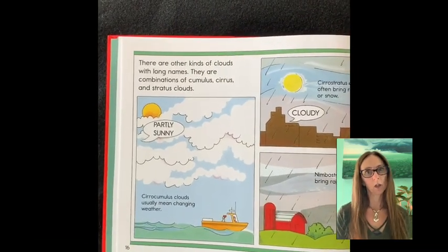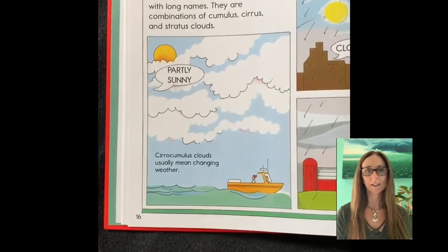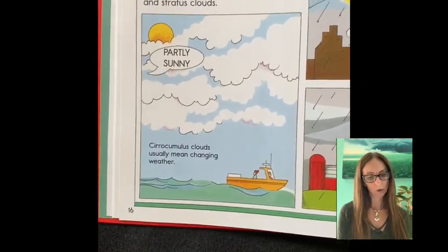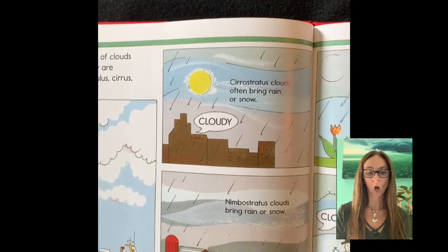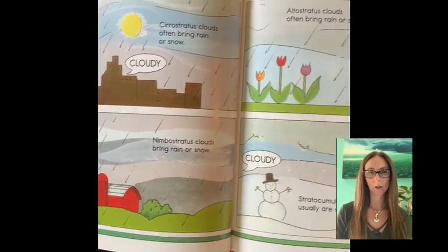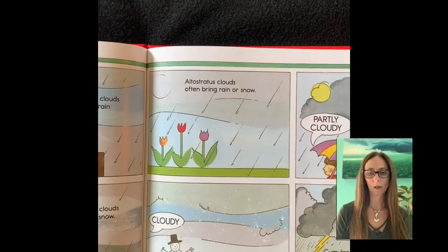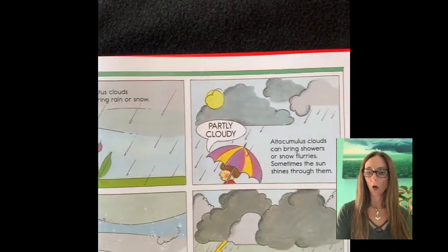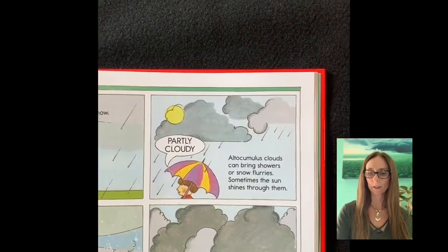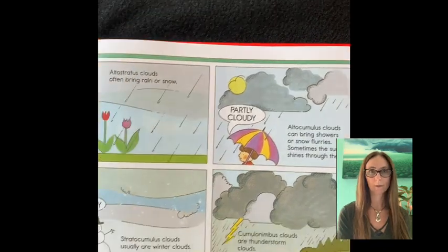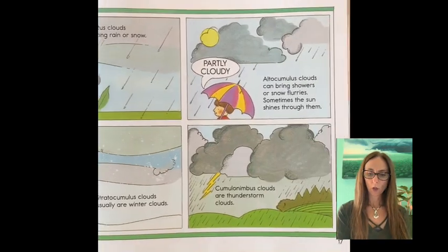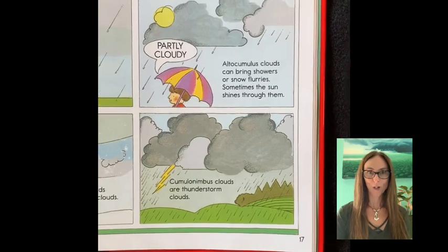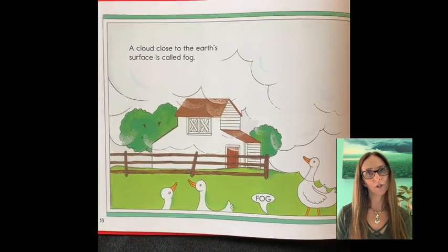There are other kinds of clouds with long names. They are combinations of cumulus, cirrus, and stratus clouds. Cirrocumulus clouds usually mean changing weather. Cirrostratus clouds often bring rain or snow. Nimbostratus clouds bring rain or snow. Altostratus clouds often bring rain or snow. Altocumulus clouds can bring showers or snow flurries. Sometimes the sun shines through them. Stratocumulus clouds usually are winter clouds. Cumulonimbus clouds are thunderstorm clouds. A cloud close to the earth's surface is called fog.